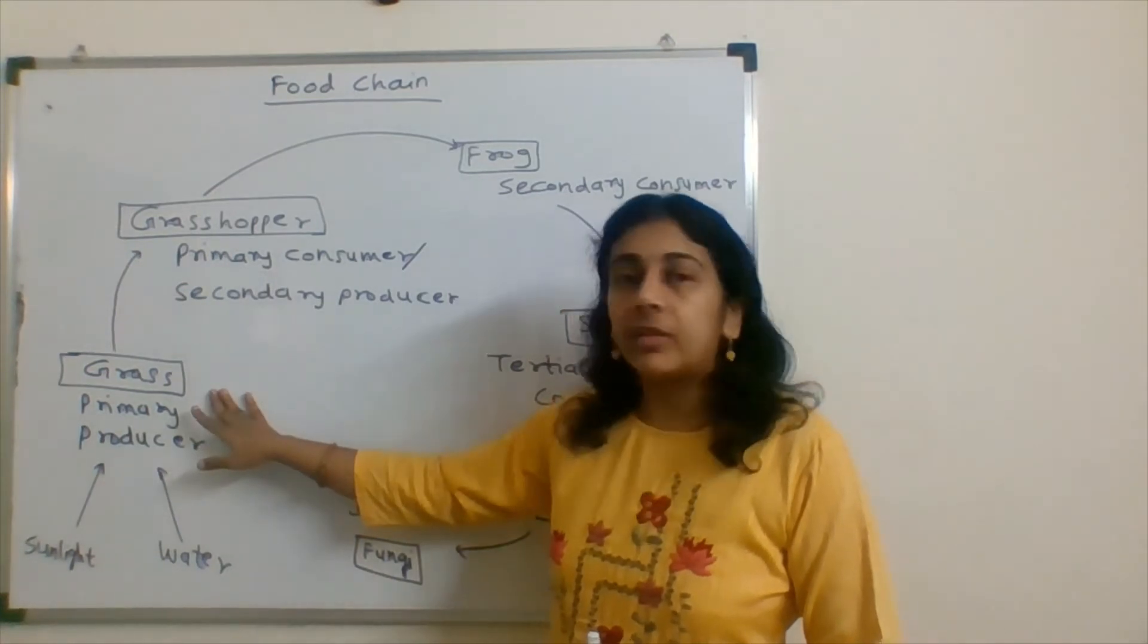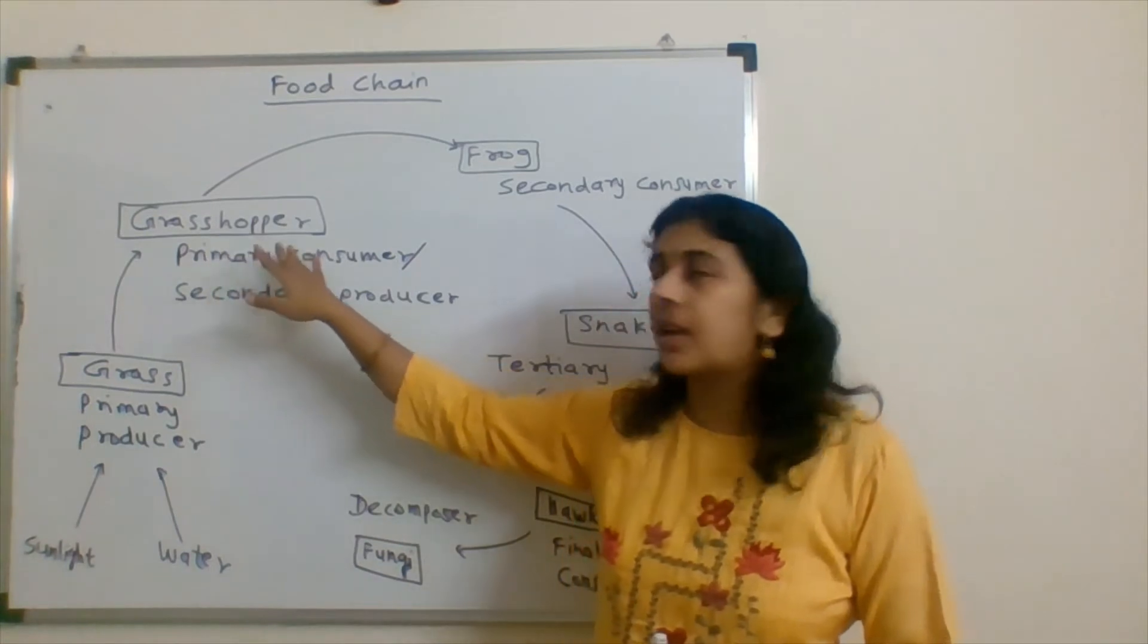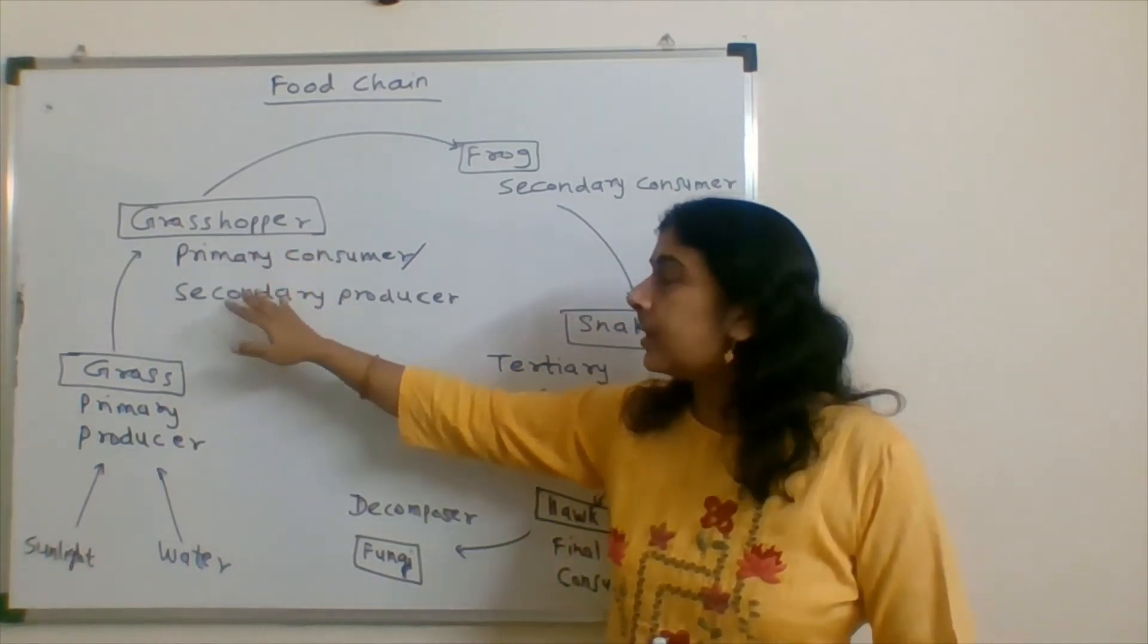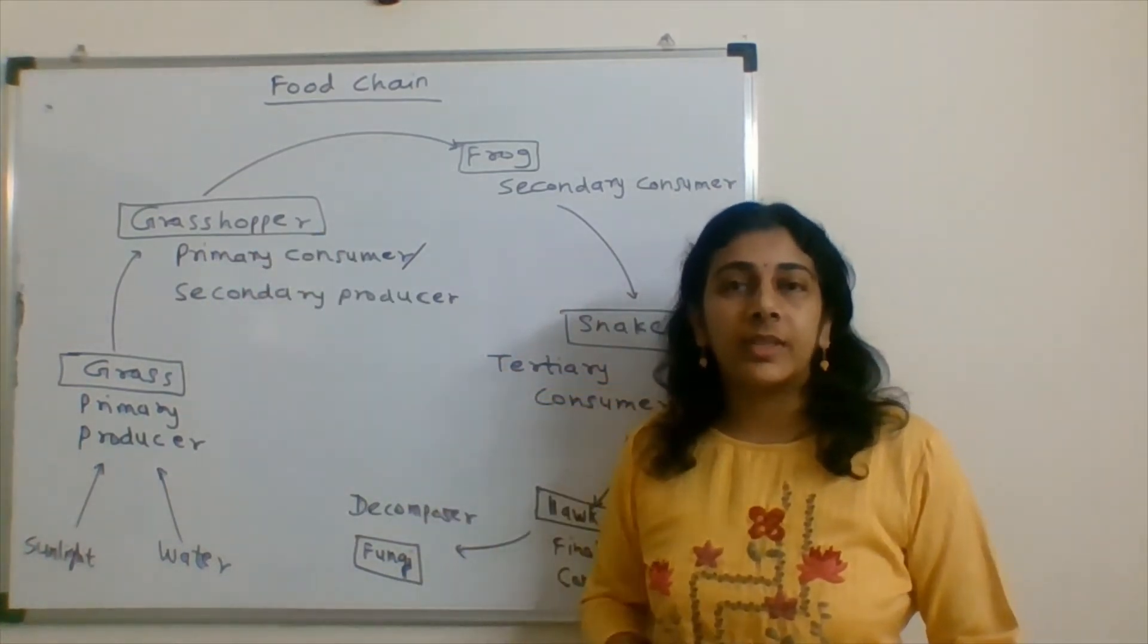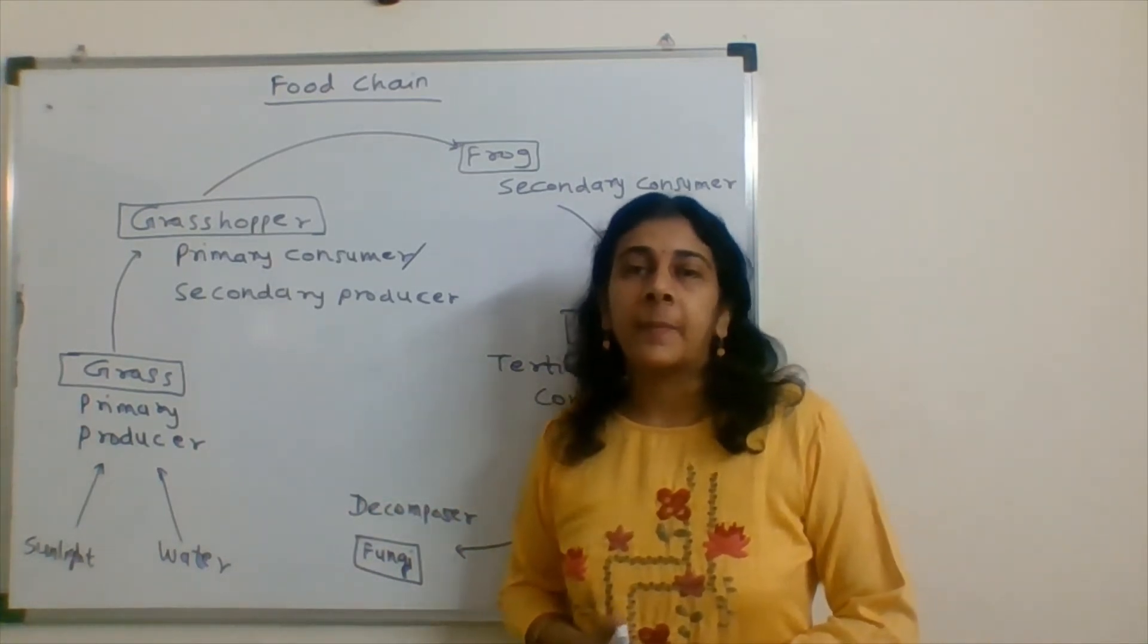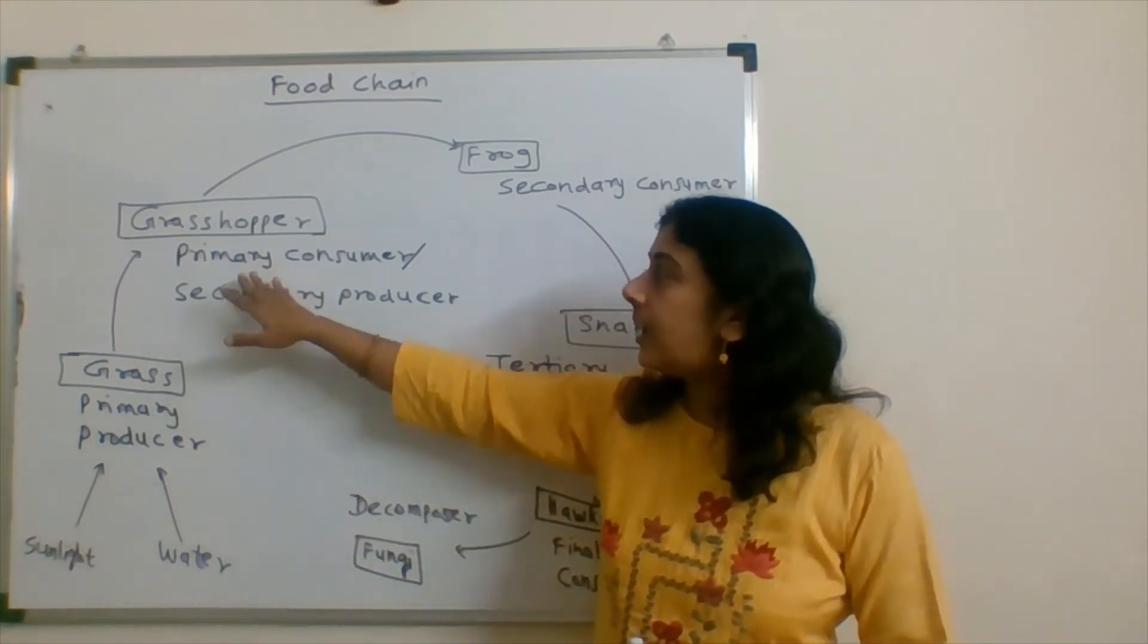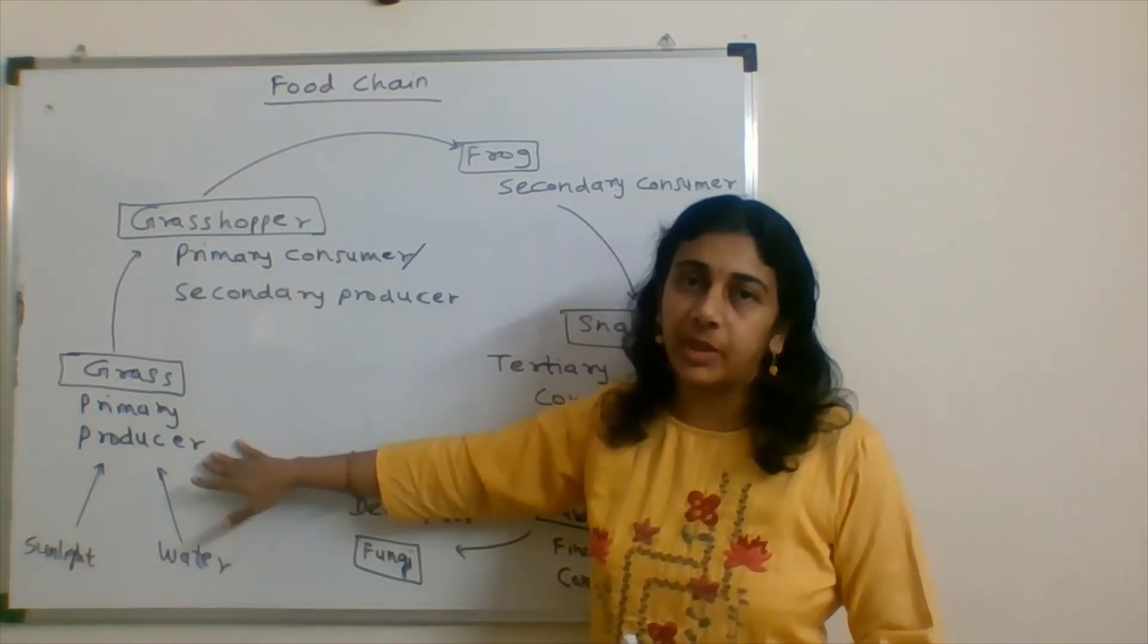Then depending on this grass, herbivores would be there. So herbivores, grasshopper is there, or other herbivores are there, cow is there, it depends on the grass. Other types of herbivores are depending on this primary producer.